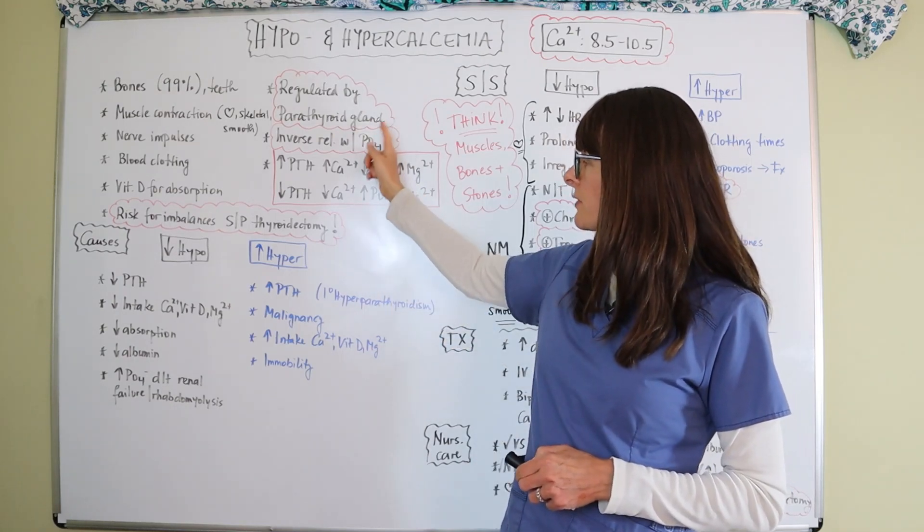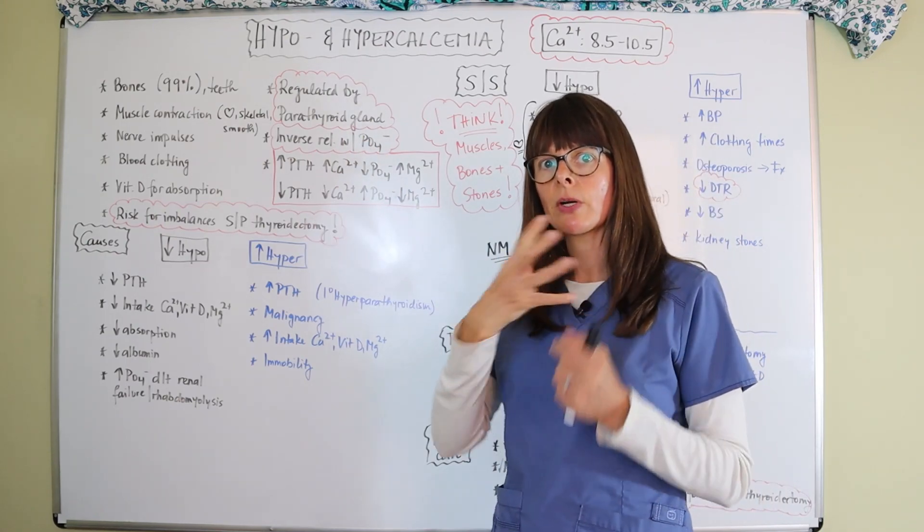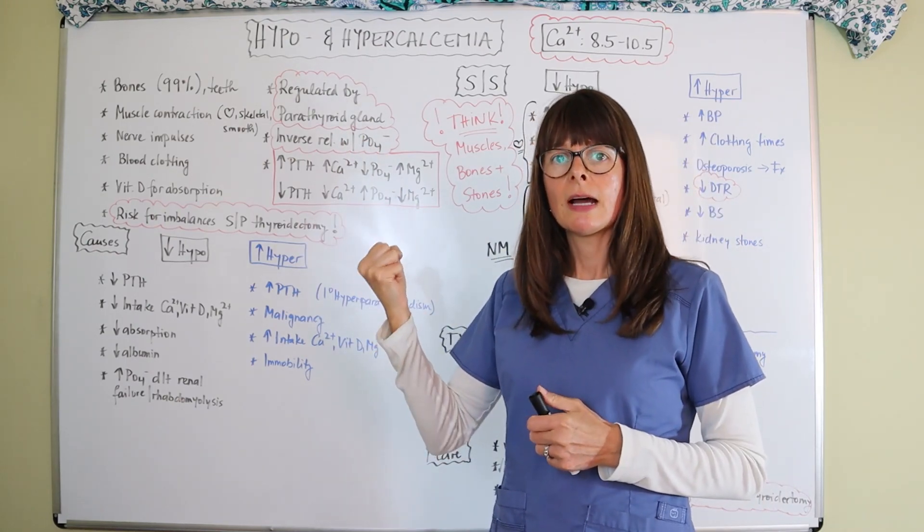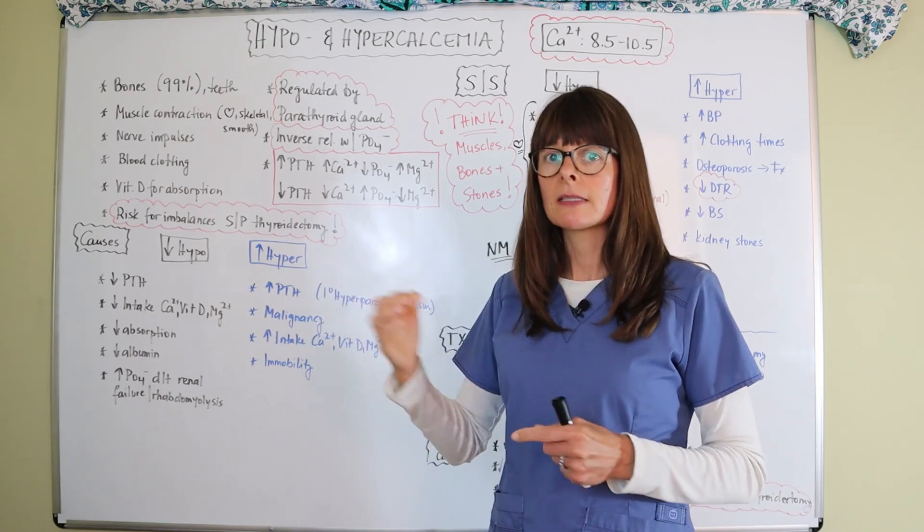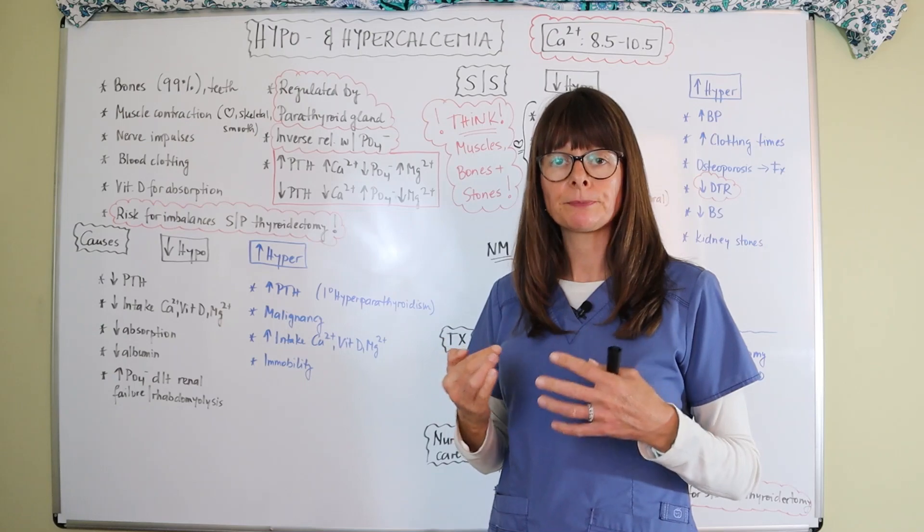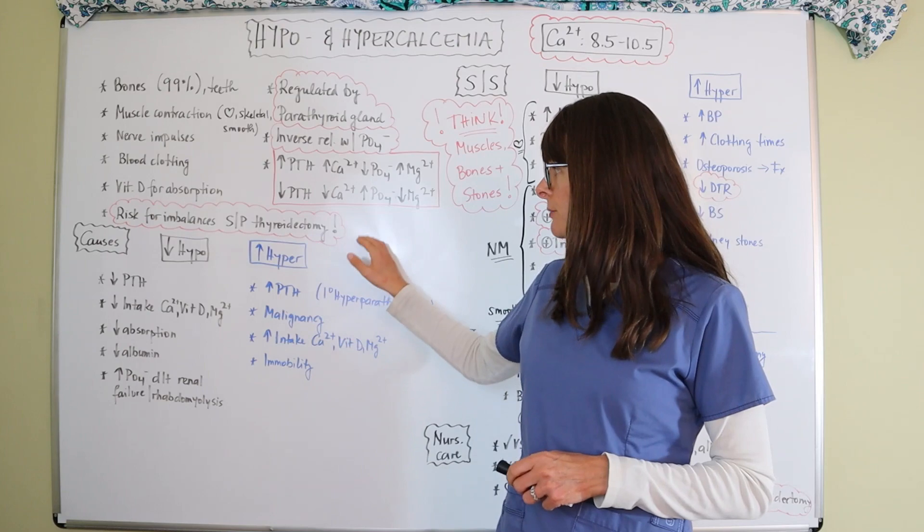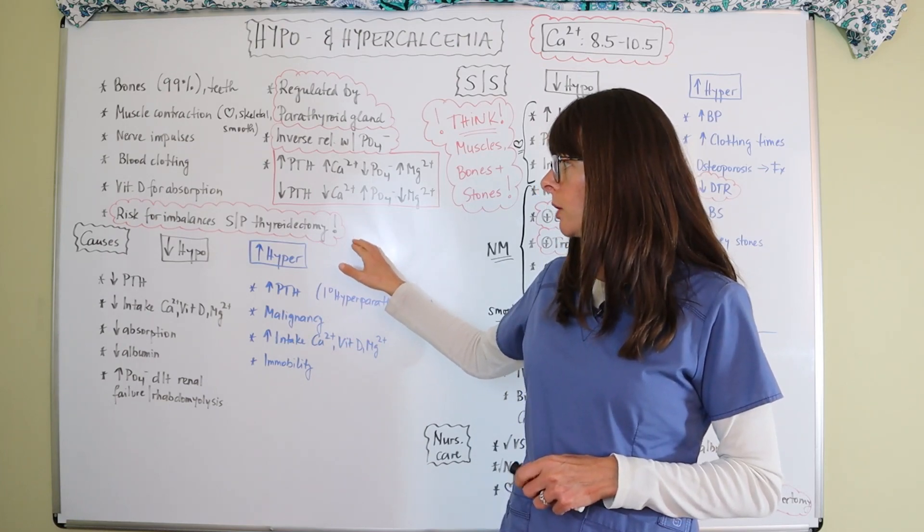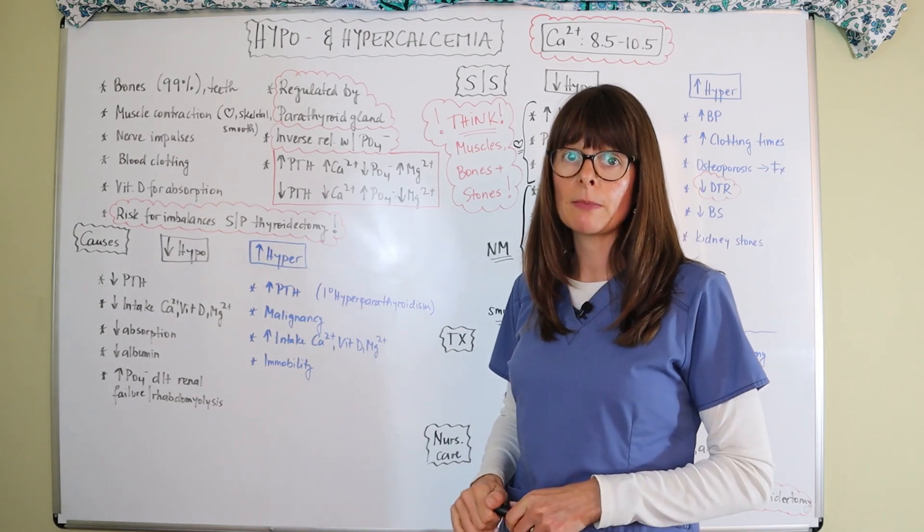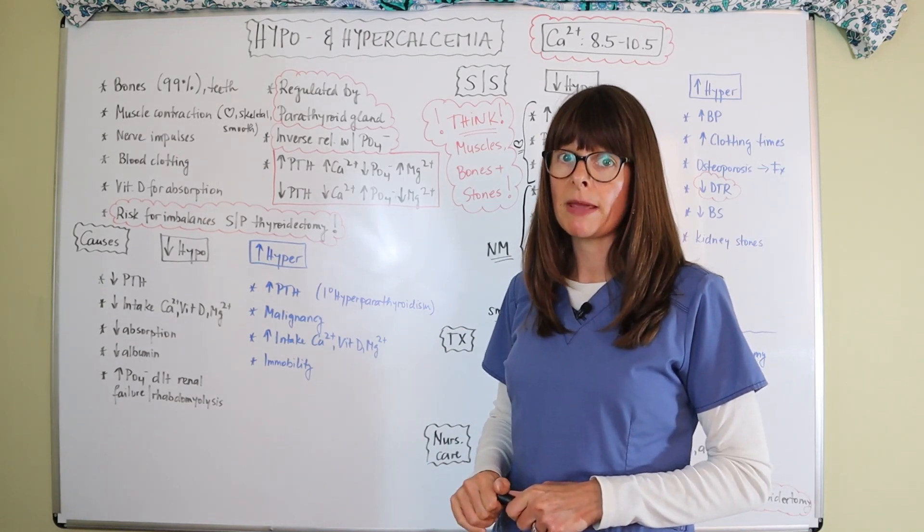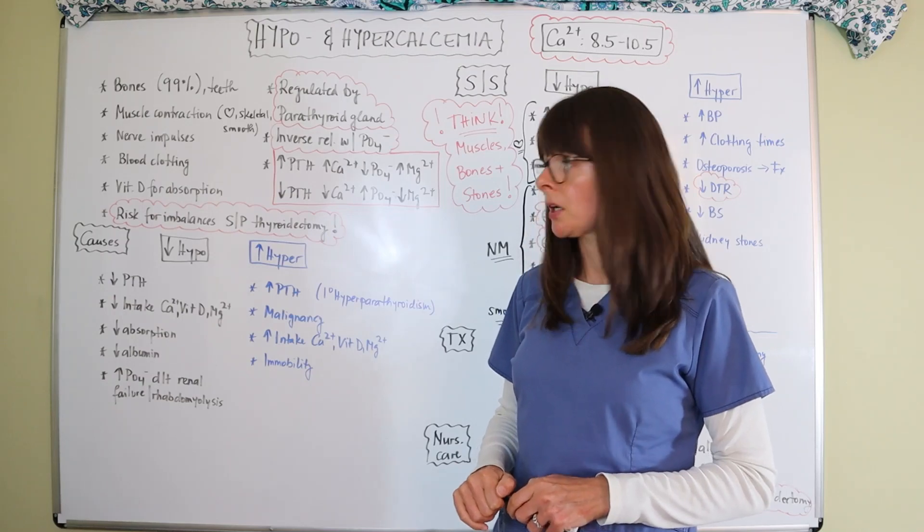And so because the parathyroid gland, those four little glands behind the thyroid, when the thyroid is removed, a lot of times the parathyroid glands go with it. And so then we can't regulate the calcium levels and that's how imbalances occur. So particularly we have to be aware of risk for imbalances after thyroidectomy. And this always comes up on exam questions and it may also come up on your NCLEX exam. So pay particular attention here.